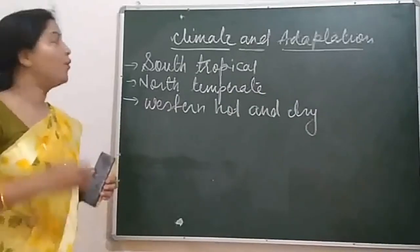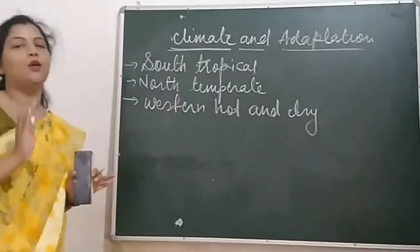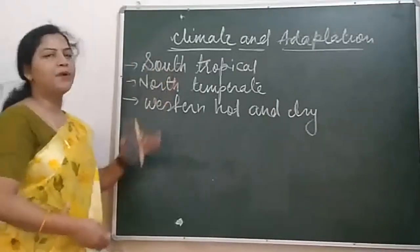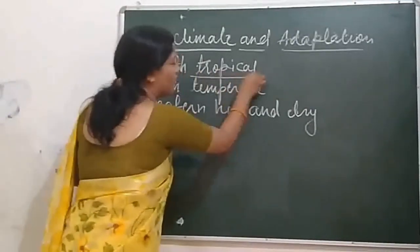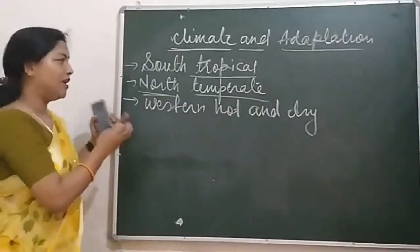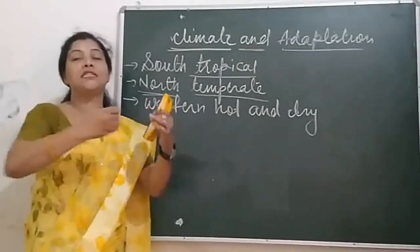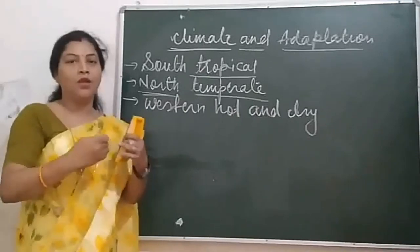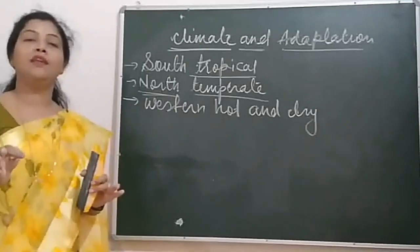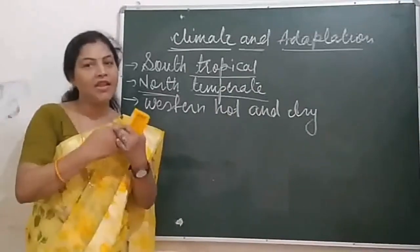Some parts of the Himalayan regions of India have freezing temperatures. So there are different types of climatic conditions in India — variety of climates in different parts. Southern part is tropical, northern part is temperate, generally tropical monsoon, western part is hot and dry, and some Himalayan regions have freezing temperatures.